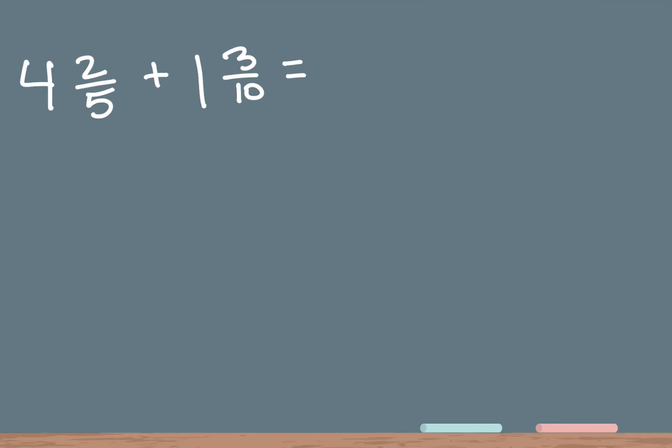Welcome! Today I'll be going over how to add mixed numbers. A mixed number is a combination of a whole number and a fraction. The whole number is the big number in front of the fraction. So in the problem on our board, the whole numbers are 4 and 1. The top number of a fraction is called the numerator and the bottom number is called the denominator.